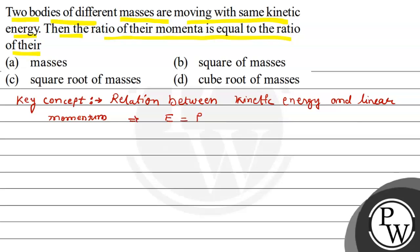E is equal to P square upon 2m. Here, P is linear momentum and E is kinetic energy. Now, let's see the solution.